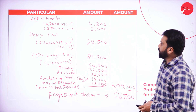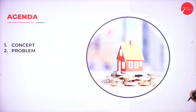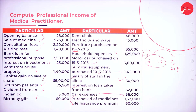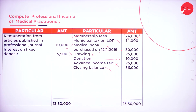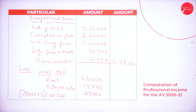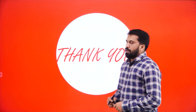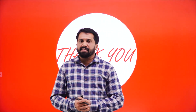Hope you are clear. I will show you all these slides — please take a screenshot. So this is your agenda: concept and problem — compute professional income of a medical practitioner, showing professional income, adjustments, and the answer in two parts. Please work out the same problem without seeing the answer so that you will understand better. Thank you.